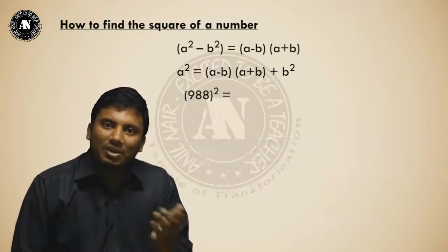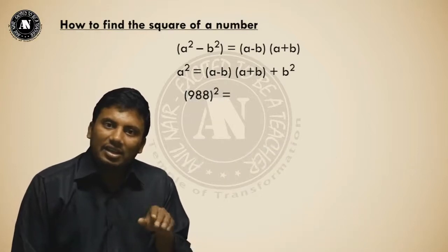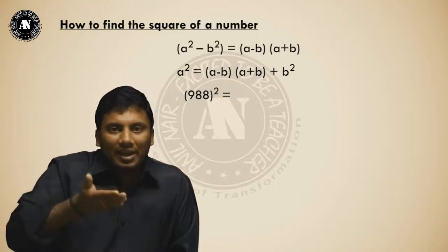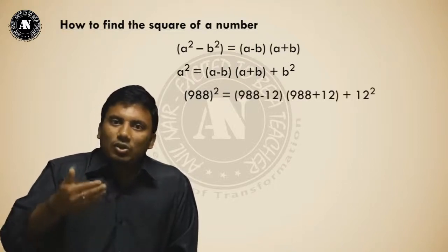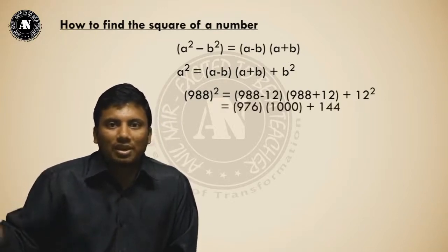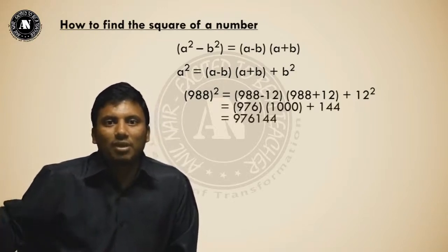One more example. 988 whole square. 988 is nearer to which power of 10? 1000. So, answer will become (988-12)(988+12) + 12². 976 into 1000 plus 144. 976,144.